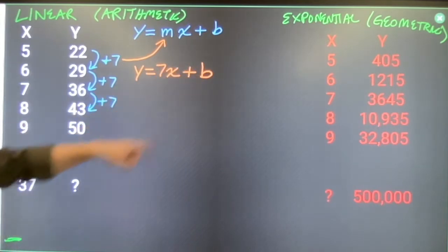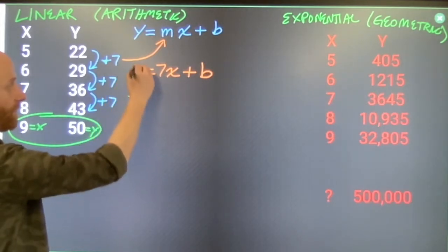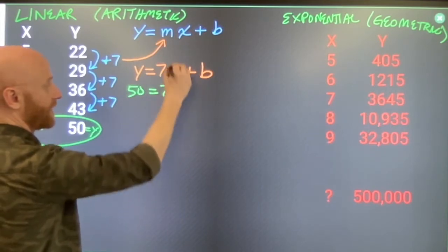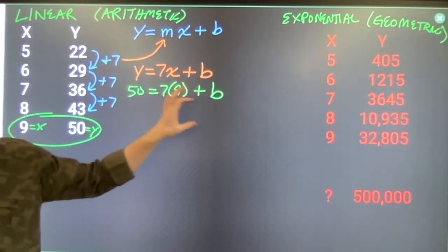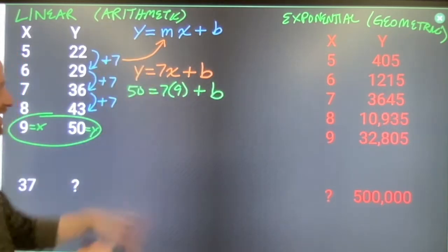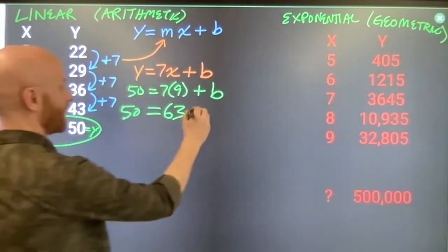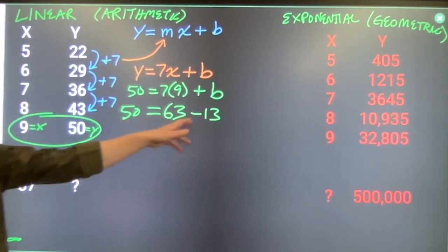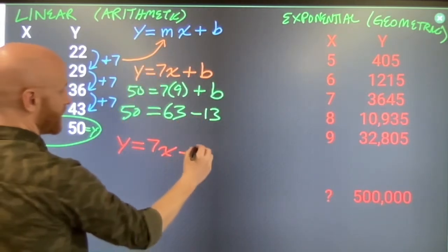In order to find this y-intercept, one way that I can do it is I can take a point that I already know the x and the y value for. 50 equals y when 9 equals x. And then I just figure out what that letter b needs to be so that this will be true. 7 times 9 is 63. That does not equal 50. But if I subtract 13 from it, it will make that situation true. 63 minus 13 is 50. So, my equation: y equals 7x plus negative 13, or minus 13.